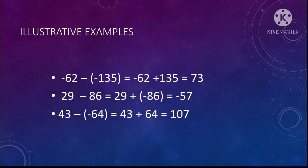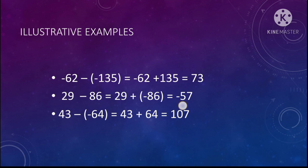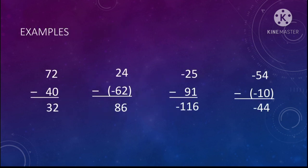Next is 43 minus negative 64. The negative sign multiplied by the minus sign becomes positive, so it is similar to 43 plus 64. Since both are positive, the difference is also positive. So 43 plus 64 is equal to 107, or 43 minus negative 64 is equal to 107.